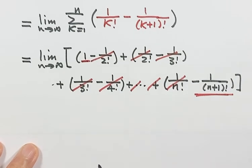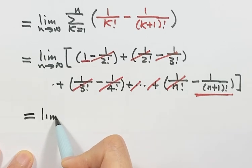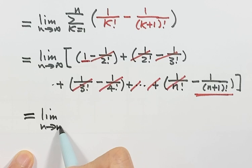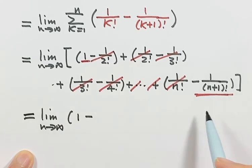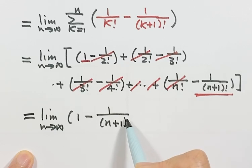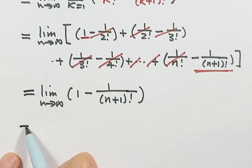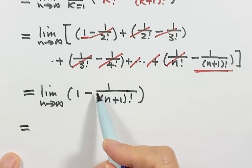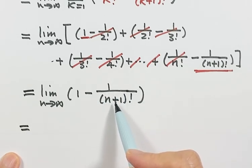So that's why here we have the limit, n goes to infinity, and there's 1 minus the last term. Then as n goes to infinity, this term goes to 0. So then the answer is 1.